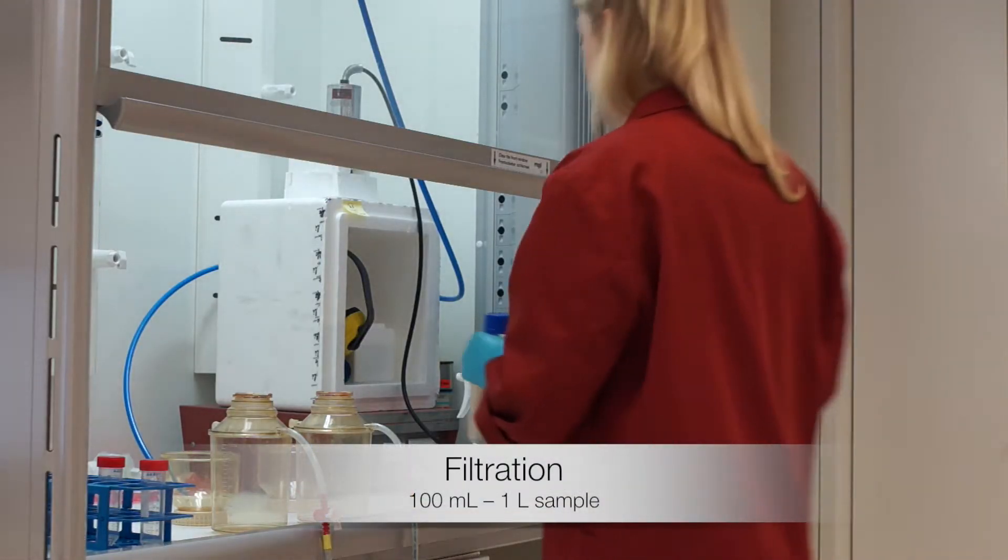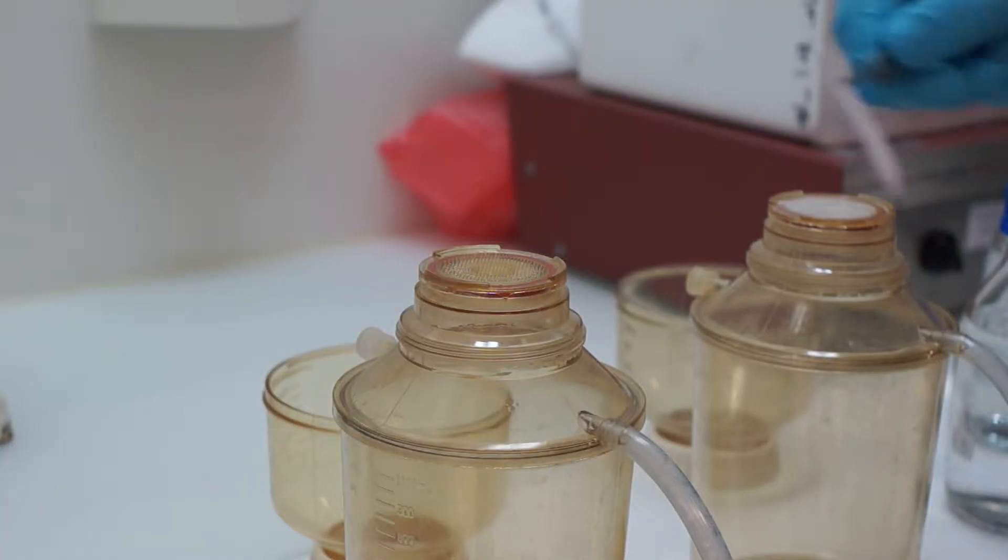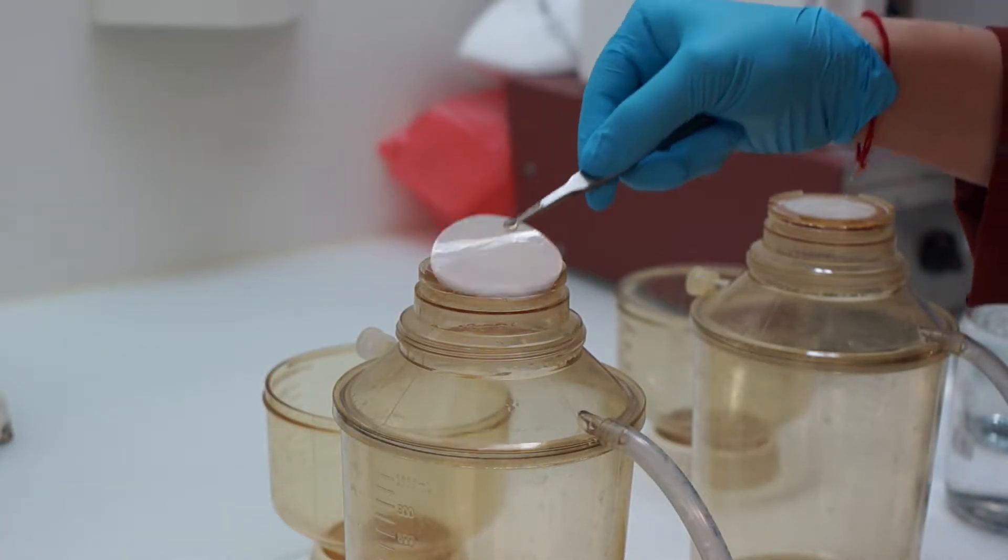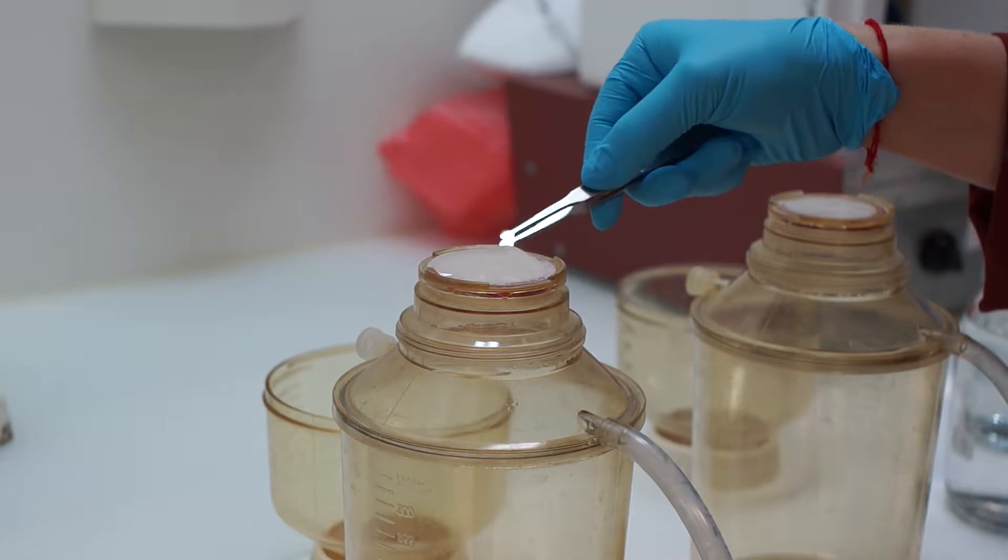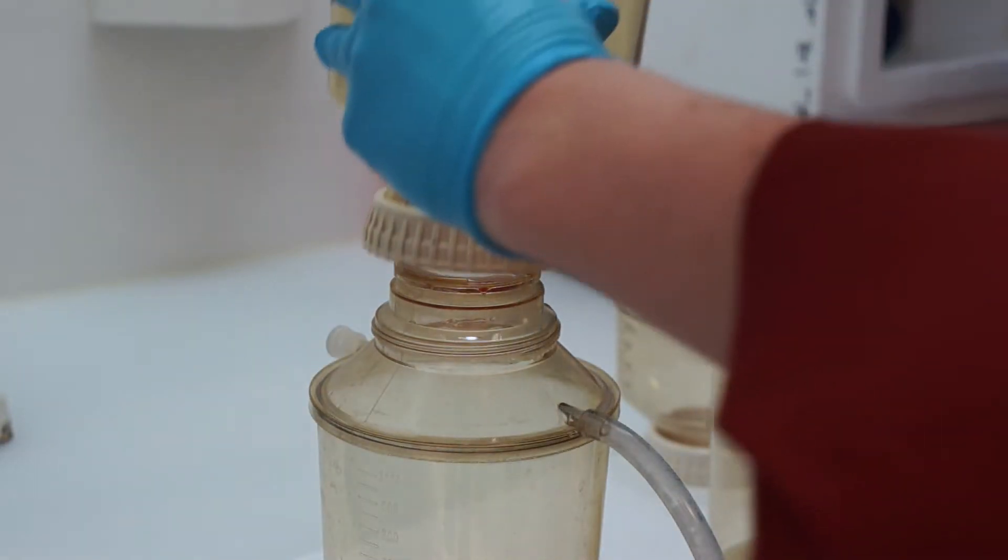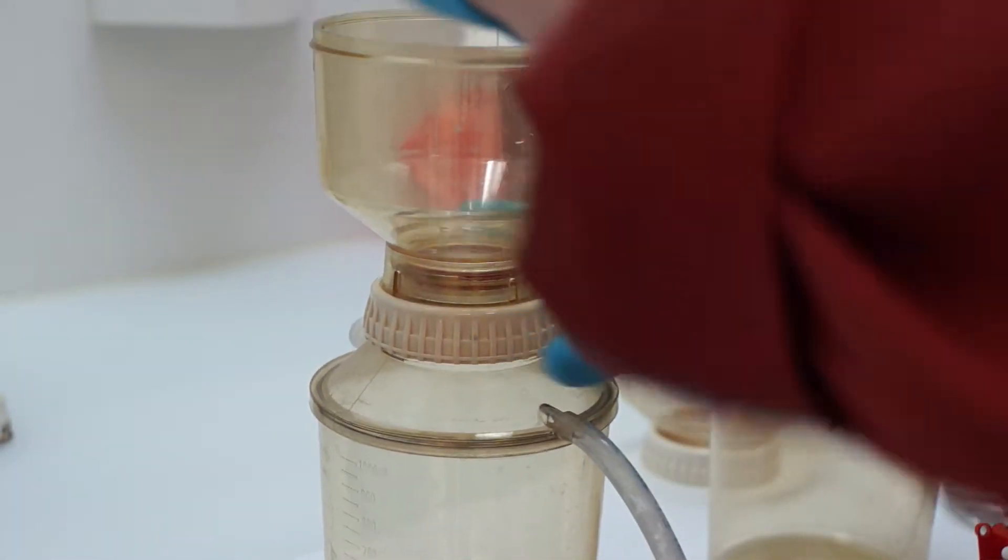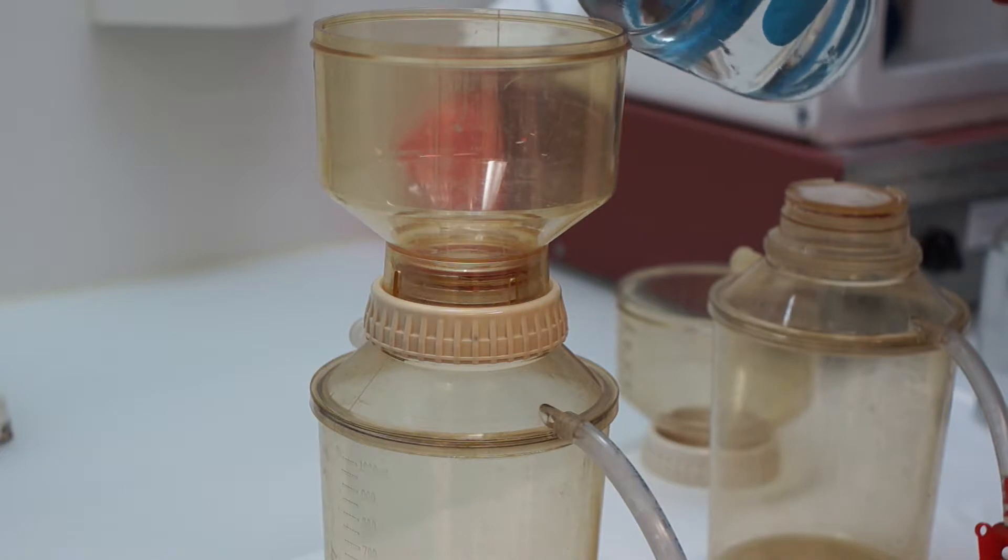Then I'm going to filter the water samples with a standard filtration unit. I'm placing the filter that RQ Macro provides with the kit on top of the filtration unit with the shiny side facing upwards. Then I'm attaching the upper part of the filtration unit, switch on the pump and let the sample run through the filter.